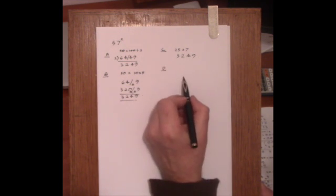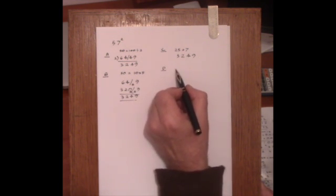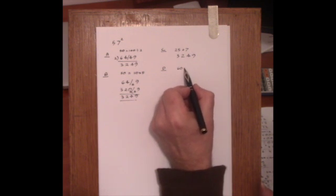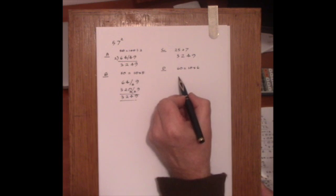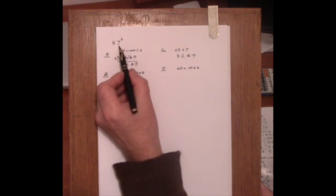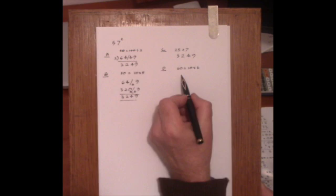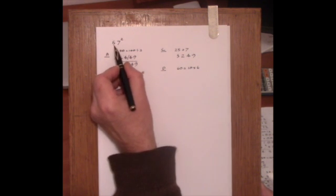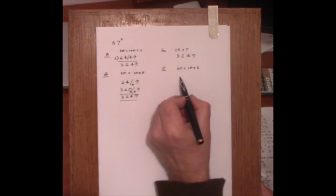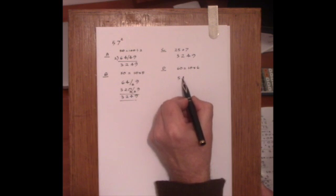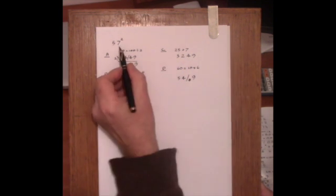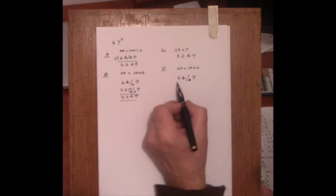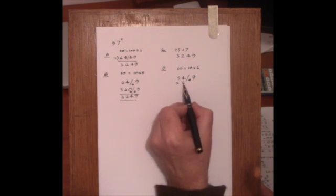Now method D, we could take 60 as a working base. The 60 is equal to 10 times 6. So 57 this time has a deficiency of 3. So we decrease 57 by 3, giving 54. And then set up the square of the deficiency which is just 9, because the deficiency is 3. 3 squared is 9.